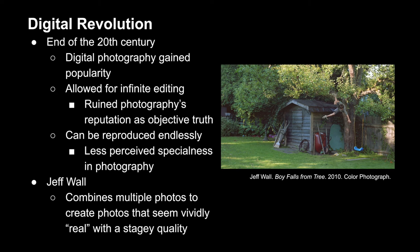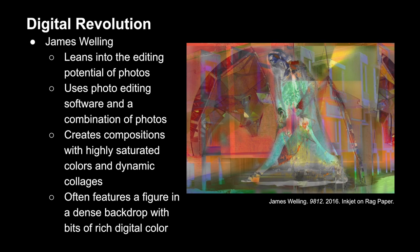James Welling utilizes a combination of photos and photo editing software to really lean into the editing process. His works are usually composed of highly saturated colors and dynamic collage components, frequently featuring a figure in a dense background among splashes of rich digital color. As a result, the aesthetics reflect the process that created them — they look very digital.